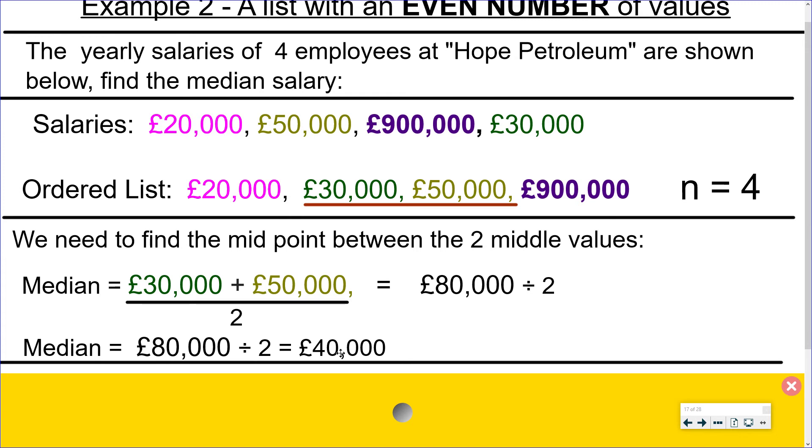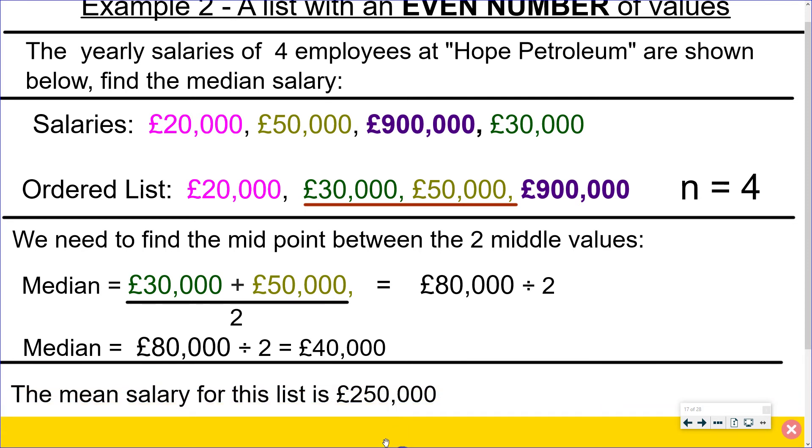And so this £40,000 is quite representative of the list of four numbers. It's quite close to three out of the four. It's nowhere near the outlier but that could be good. And if we were to have worked out the mean of this list it would have been a lot higher. So in this case the median is more representative of the numbers on this list than the mean is.